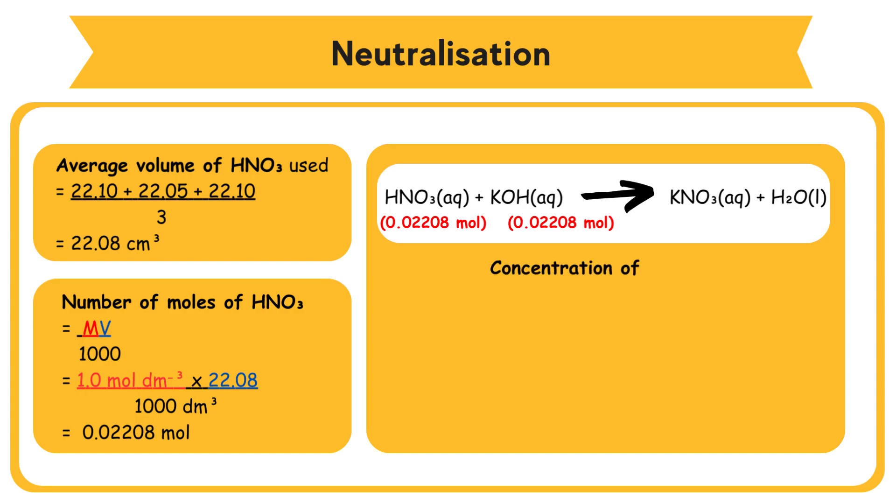Concentration of KOH = N/V = 0.02208 / (25/1000) dm³ = 0.883 moles per dm³.